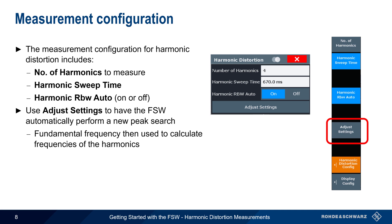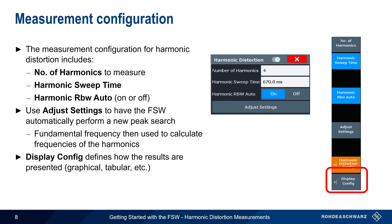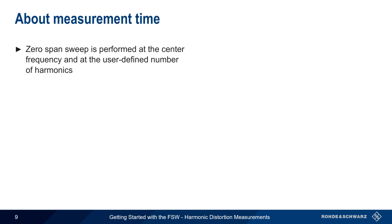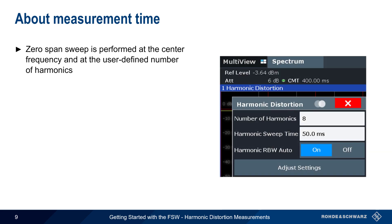As with most FSW measurements, the Display Config button can be used to select how the measurement results should be displayed, for example in a trace, a table, etc. The FSW uses zero-span mode to measure the fundamental and each of the N user-defined harmonics. In this example, measurements are being made up to the 8th harmonic.